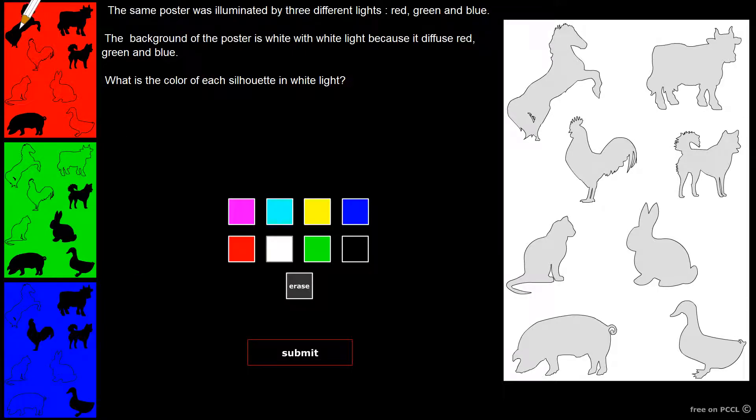I am interested in the horse. It absorbs red but diffusely reflects green and blue. My retina will receive both. And my brain, which will add up, will tell me that the horse is cyan.